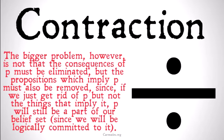The bigger problem is not just that the consequences of P must be eliminated, but that the propositions which imply P must also be removed. Since if we just got rid of P but not the things that imply it, P would still be part of our belief set — we would be logically committed to it. If you had Q and 'Q implies P' in your belief set and just got rid of P, you're still logically committed to P unless you've gotten rid of modus ponens. But since you must have all tautologies and rules of logic in your belief system, you're going to have a problem.